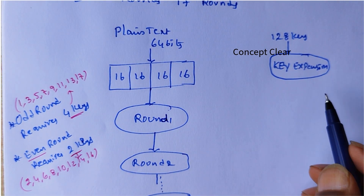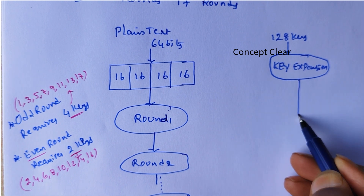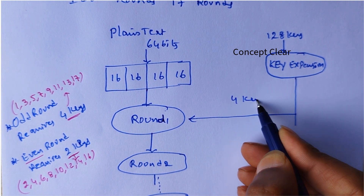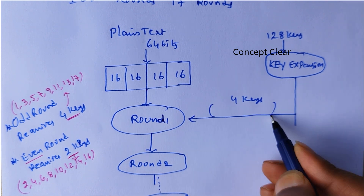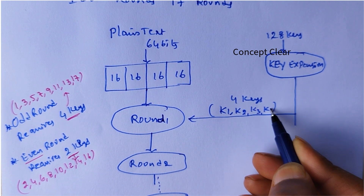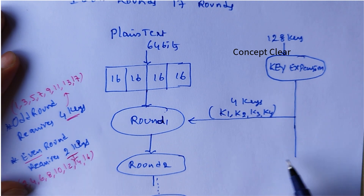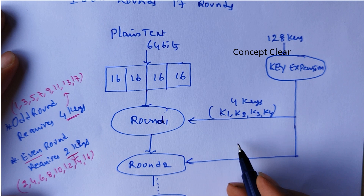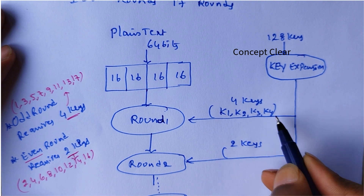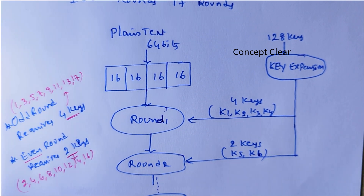The key expansion allocates keys for each round. For round 1 (an odd round), it sends 4 keys: K1, K2, K3, K4. For round 2 (an even round), it sends only 2 keys — after the first 4 are used, the next keys K5 and K6 are used for round 2 operation.